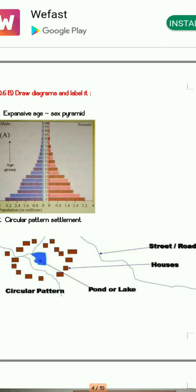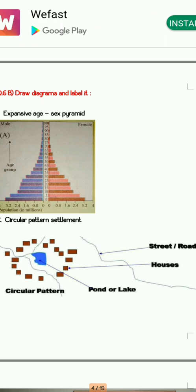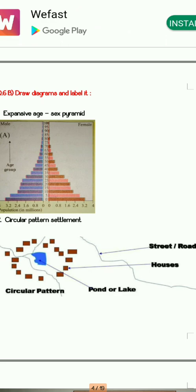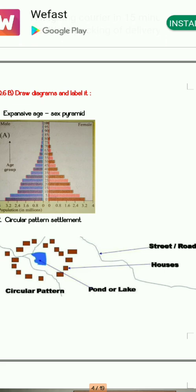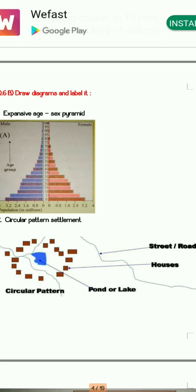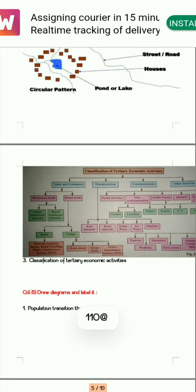Any one of these three pyramid types can appear in the exam. Next is the circular pattern. For circular pattern, you need to label it properly. Circular patterns are basically formed around a pond, market, or mandir. It is created surrounding some place or water body. You can see there is a pond or lake, then roads or streets around it, and several small square dwellings drawn around it. This is how you draw the circular pattern.